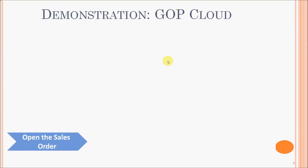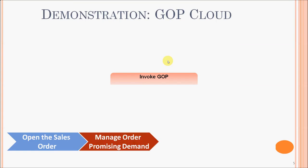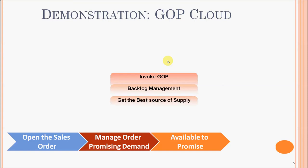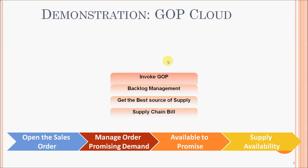I'll do a screenshot demonstration of GOP Cloud by invoking the GOP from the sales orders. I will also show you how you can do backlog management for a group of orders very effectively in GOP. I'll also show you how you can do available to promise, where the system will look at all available sources of supply and get the best source of supply for promising the orders. I'll also show you how you can review supply availability using the supply allocation rule you define in GOP, and how you can look at the supply chain bill of materials which is used while GOP is promising orders in the cloud.